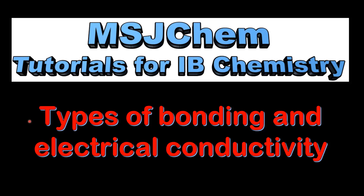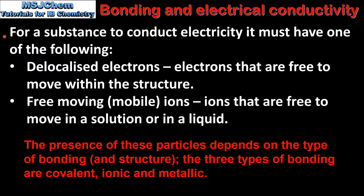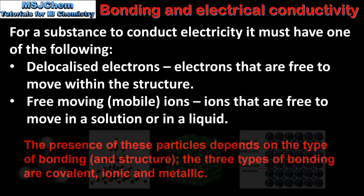This is MSJChem. In this video I'll be looking at types of bonding and electrical conductivity. For a substance to conduct electricity it must have one of the following: either delocalized electrons, which are electrons that are free to move within the structure, or free moving or mobile ions, which are ions that are free to move in a solution or in a liquid.